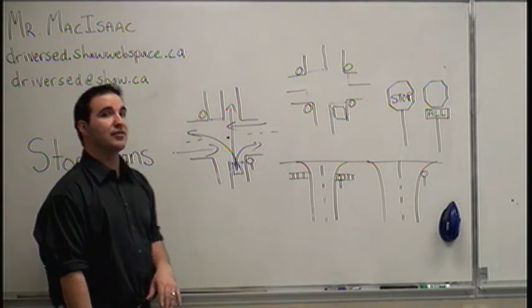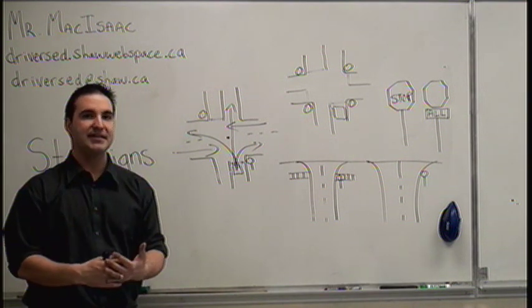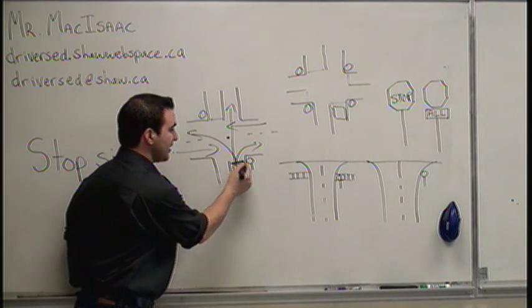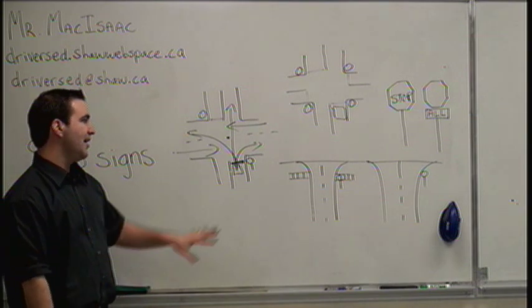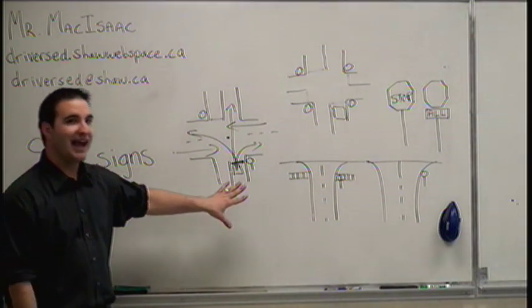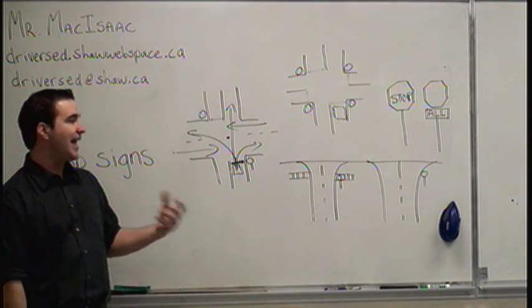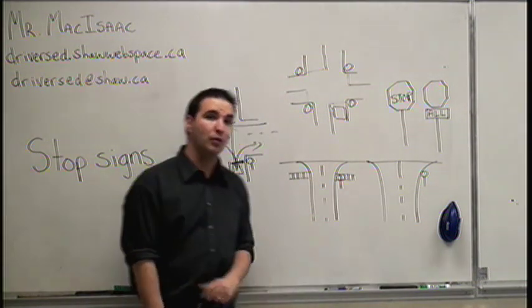Where do you stop when you come up to an intersection controlled by a stop sign? The handbook tells us there's three places. If there was a stop line, so if on the ground there was a line indicating your stop line, that's where you'd stop first. In Winnipeg, we don't often have stop lines for stop signs at residential streets.